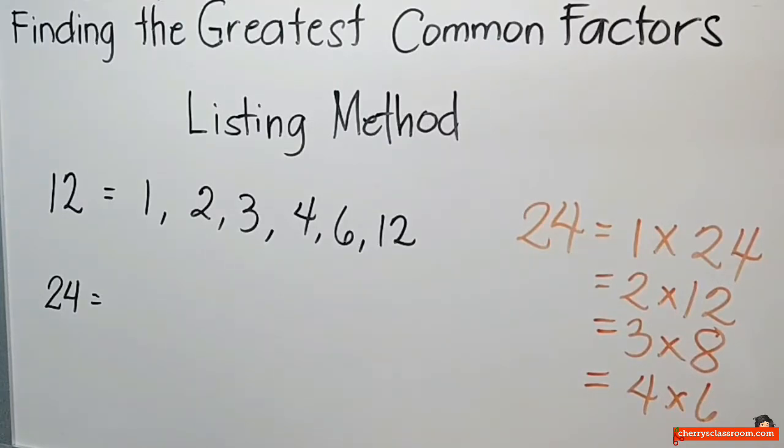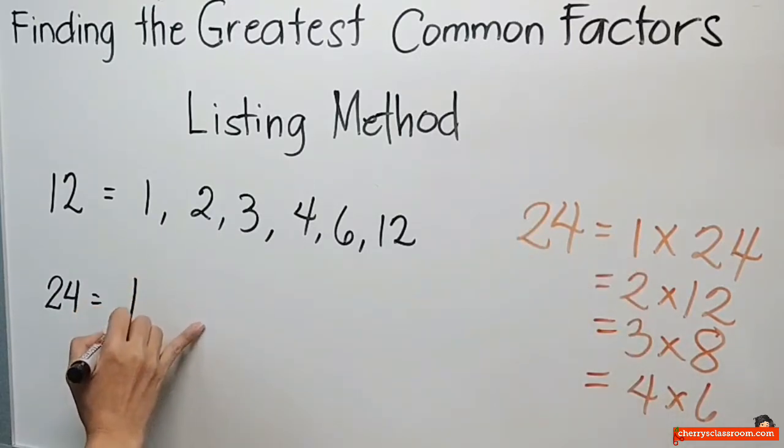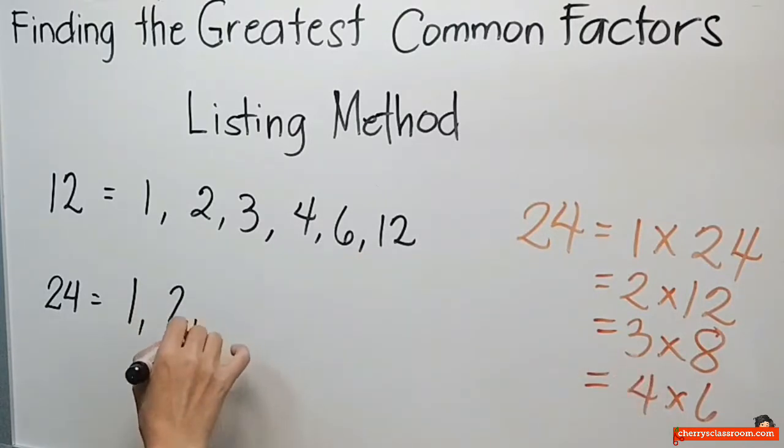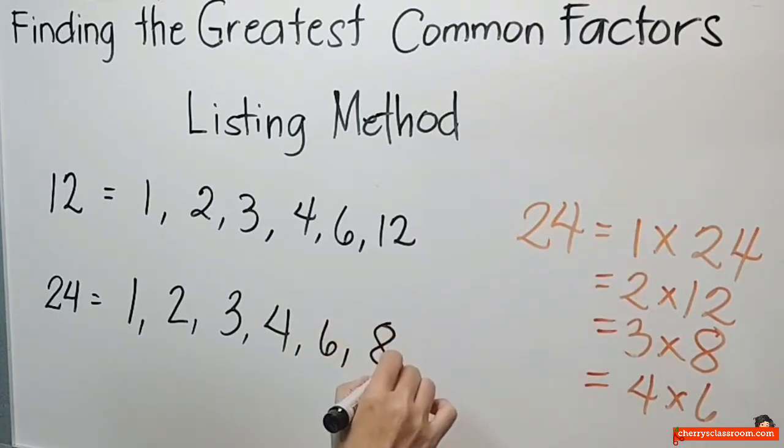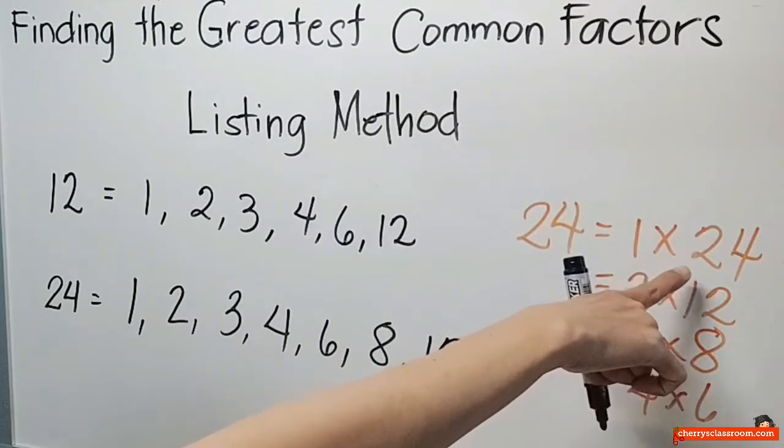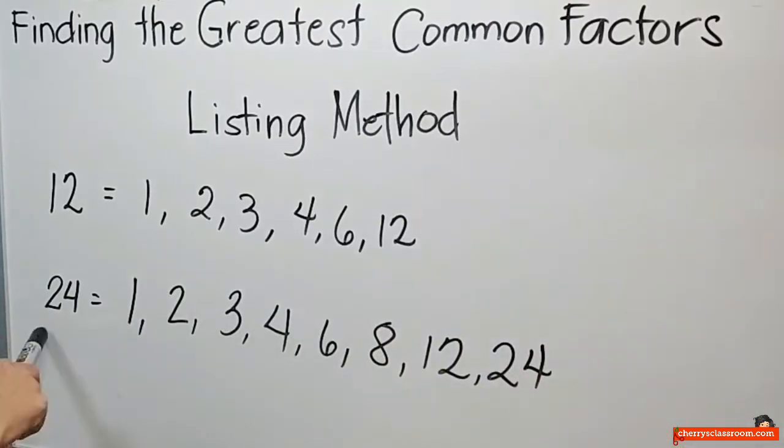Ang factors ng 24 ay 1, 2, 3, 4, 6, 8, 12, at ang sarili niya. Nilista ko na ang factors ng 24.